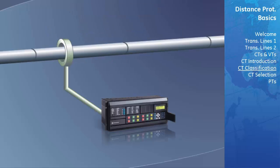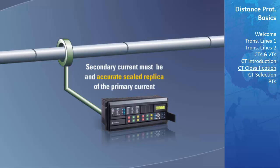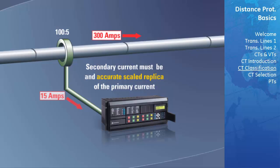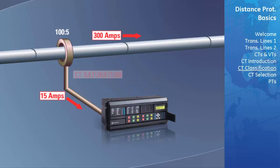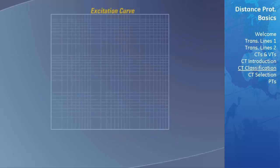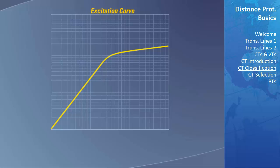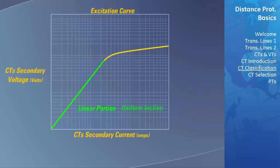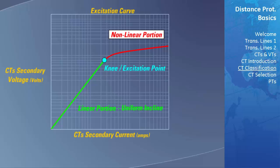In order for the relay's measurements to be accurate, the secondary current from the CT must be an accurate scaled replica of the primary current. CT saturation occurs when a current that is too large for the CT rating is passed through the CT. CT saturation can be explained using a graph displaying the relationship between secondary current and secondary voltage applied to the relay's terminals. While in the linear portion, the current and voltage rise at a uniform rate. When they rise above the linear portion of the curve, their relationship is no longer linear — the current increases at an exponential rate greater than the voltage. The point where they stop relating linearly is known as the knee or excitation point.